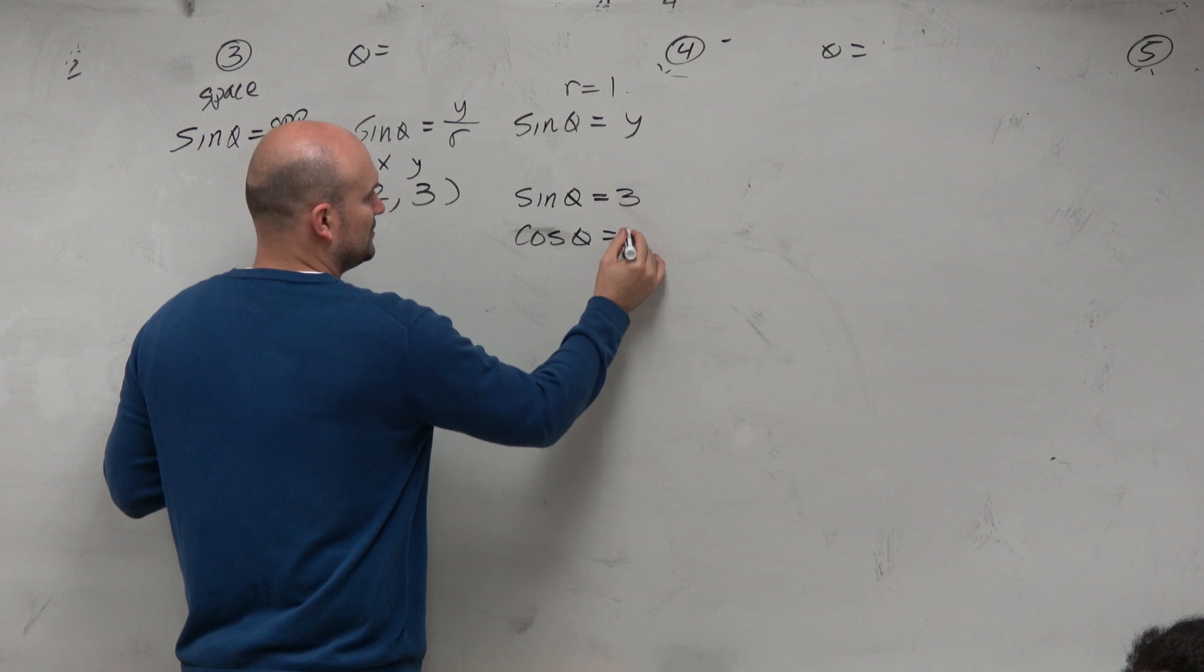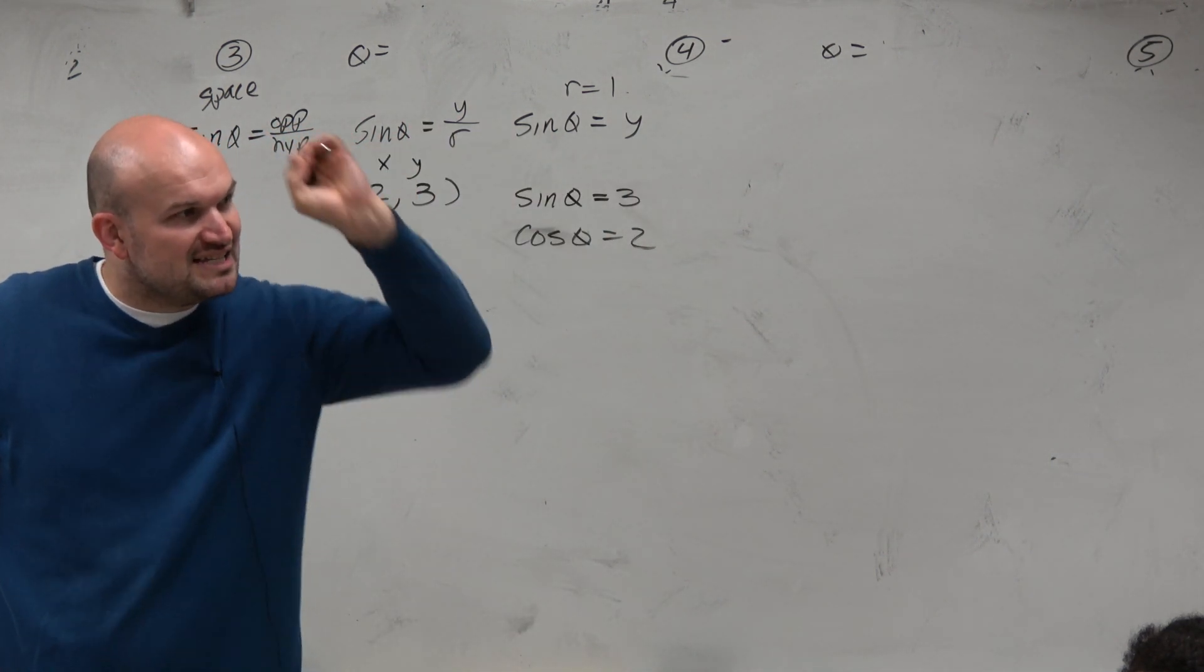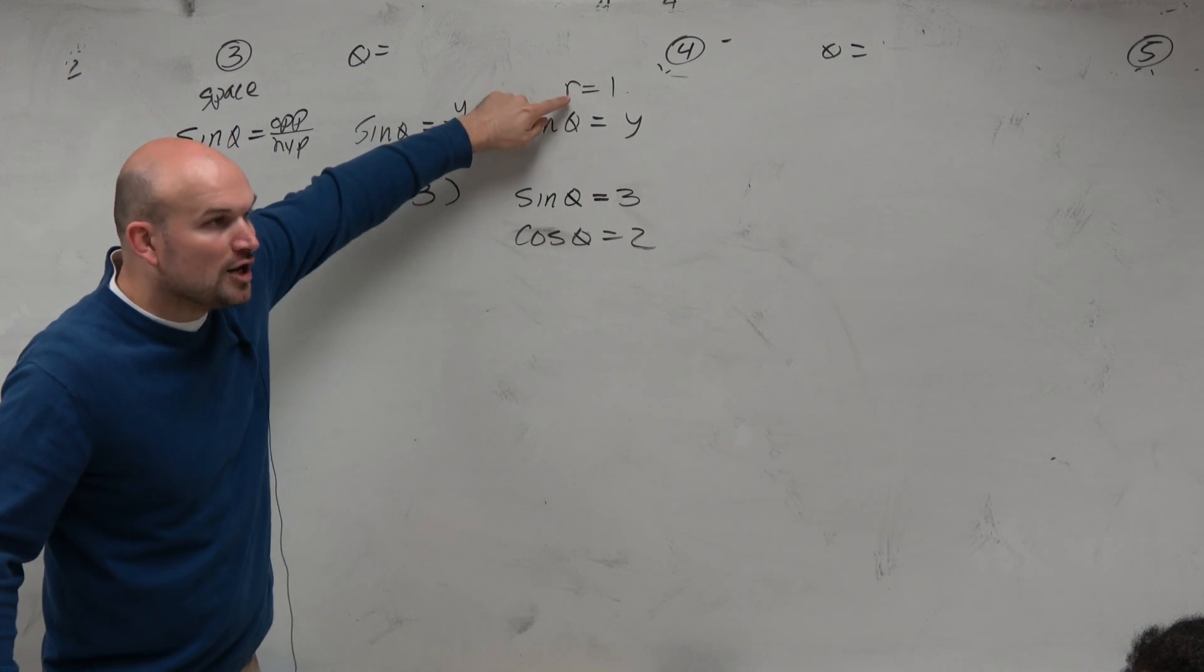And the cosine of theta is equal to 2, because that's the definition, right? But again, that definition is based on r equaling 1, meaning it has to be a point on the unit circle.